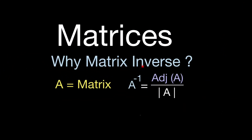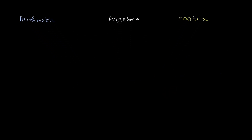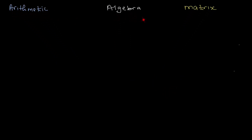The inverse of matrix A is the adjoint of A divided by the determinant of A, also called the adjugate of A divided by the determinant of A. In arithmetic, four divided by four can be written as one, or four times one over four, or four times four to the power of minus one — all equal one. This is called the unit identity.